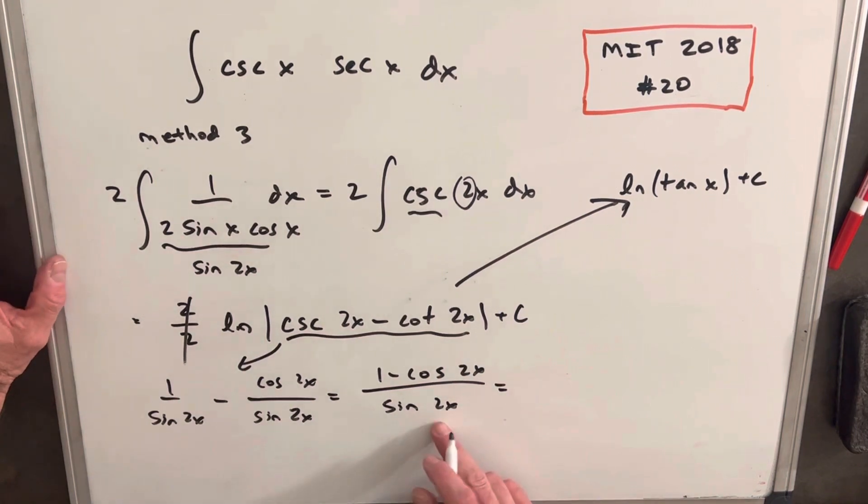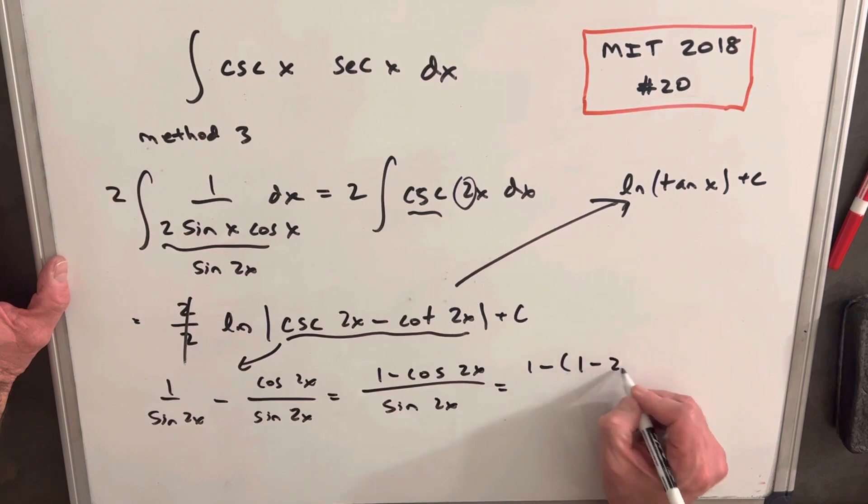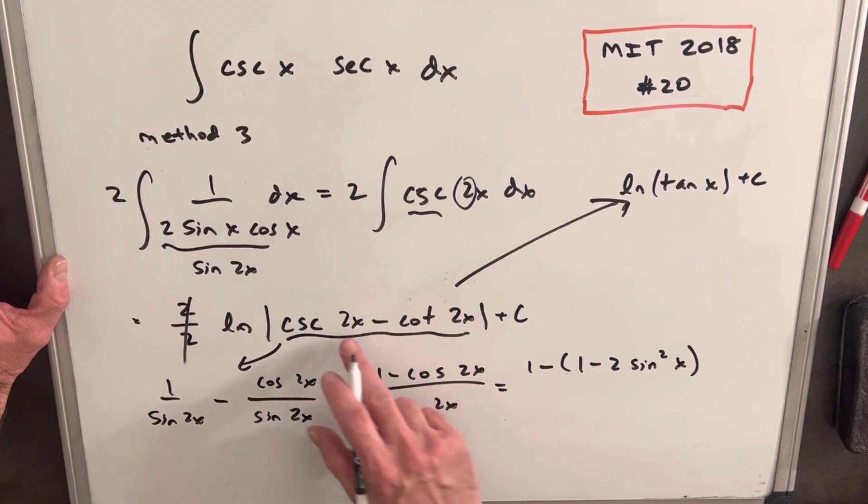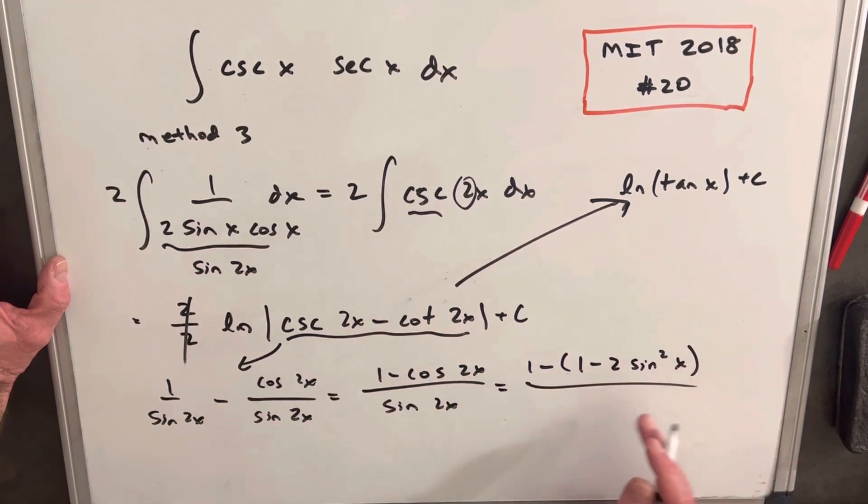But again, let's use double angle formulas again. So cosine of 2x, I can write that as 1 minus 2 sine squared x. This is the real problem we have is we want to get rid of these double angles. So we'll do that there. And then in the denominator, we'll write 2 sine x as 2 sine x cosine x.